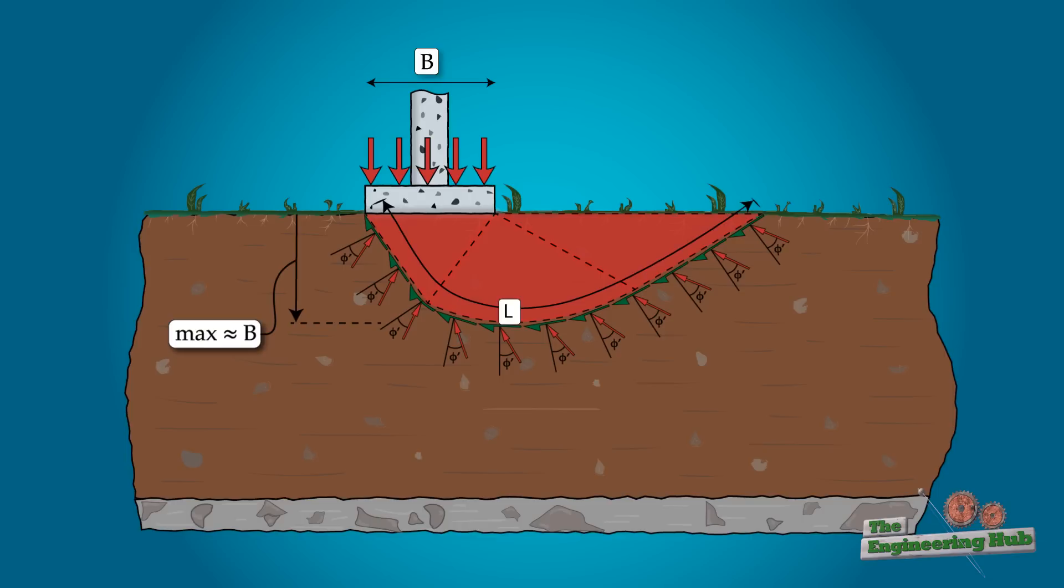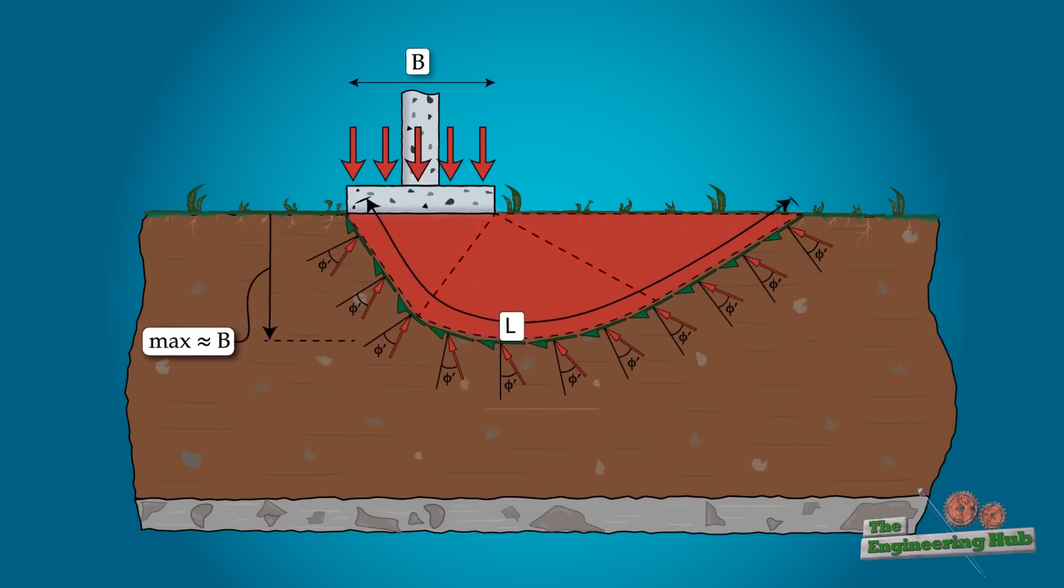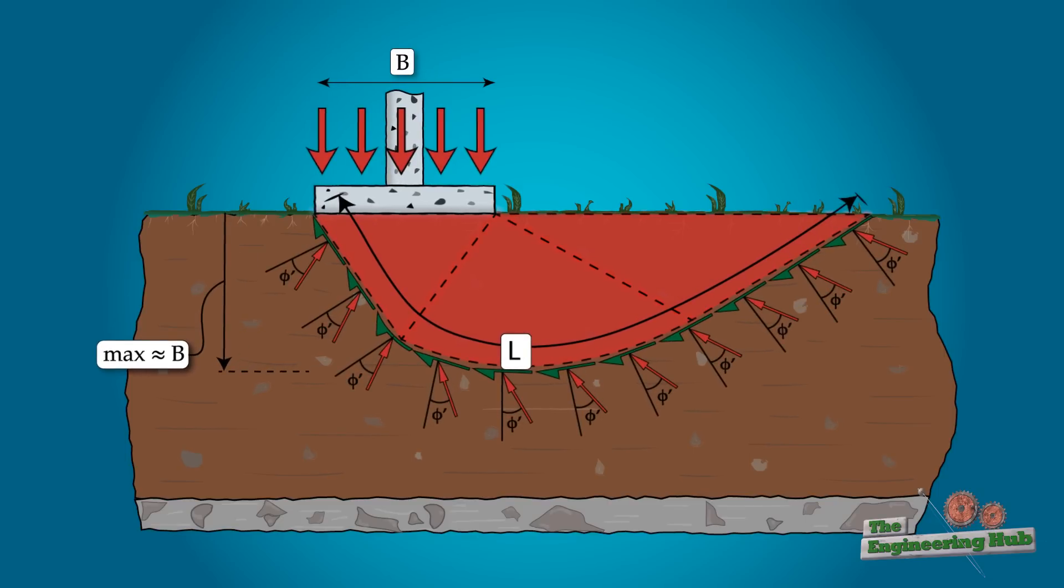Notice that the length of the slip plane depends on the size of the foundation, or in other words, larger foundations scoop out more soil underneath them, resulting in a longer failure plane, and therefore, higher resistance of the soil.